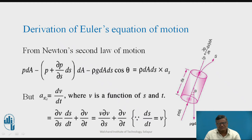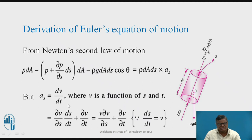The acceleration in the S direction is dV/dt. Since velocity V is a function of both S and t, dV/dt can be written as (∂V/∂S)·(dS/dt) + ∂V/∂t. Since dS/dt equals V, this becomes V·(∂V/∂S) + ∂V/∂t. This use of full derivative versus partial derivative is important to remember.